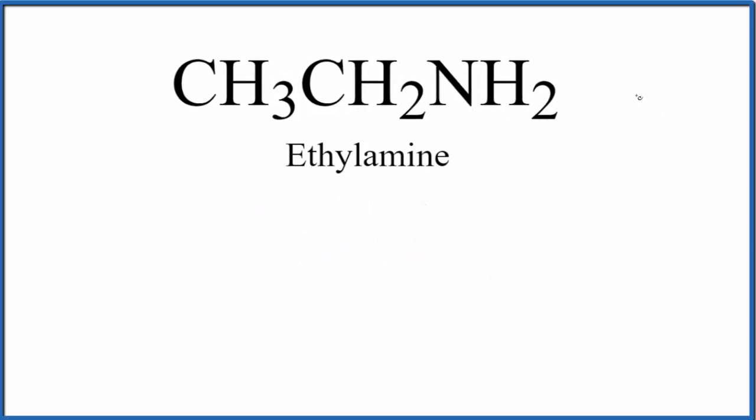So if we count up the valence electrons, we have a total of 20 valence electrons for this ethylamine here. So we can just write this out the way it's written in the formula. We have the carbon, carbon, and a nitrogen. Those are the ones that we'll draw in first.